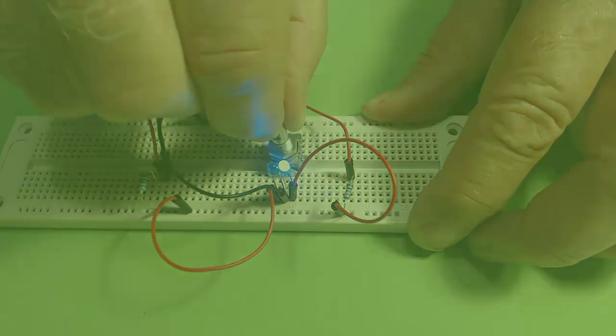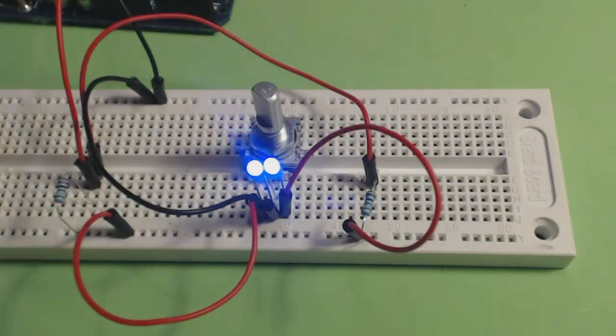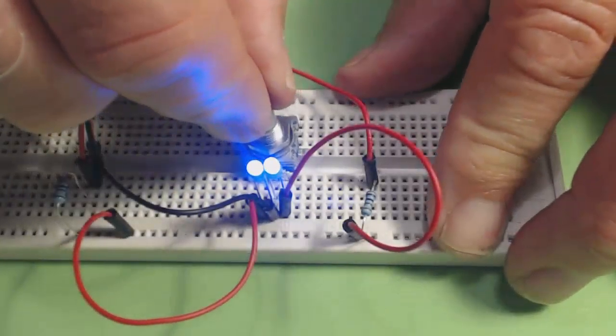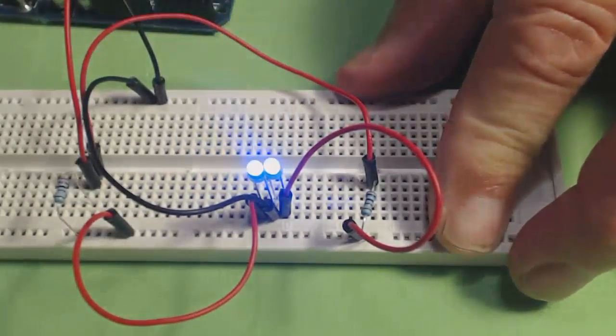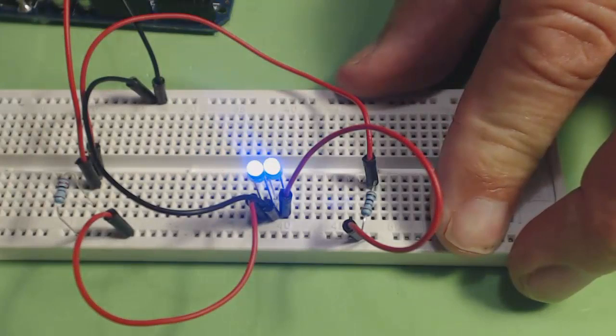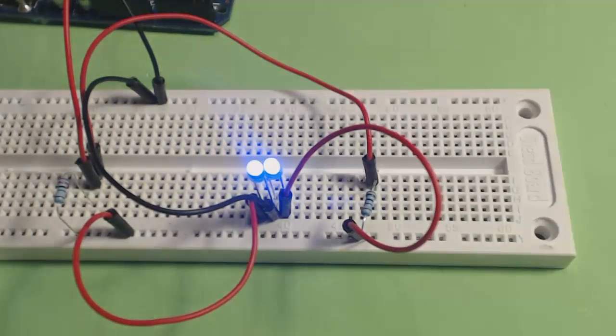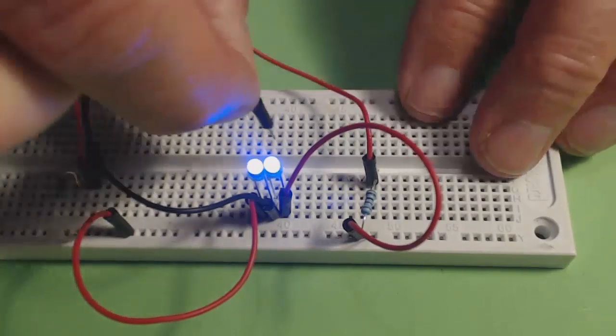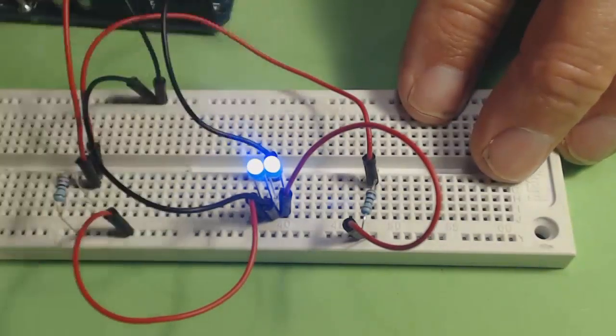You see, if I remove the encoder completely, the LEDs stay on. You'll recall that I said that the LEDs bridge the terminals of the encoder with the common pin in the middle.